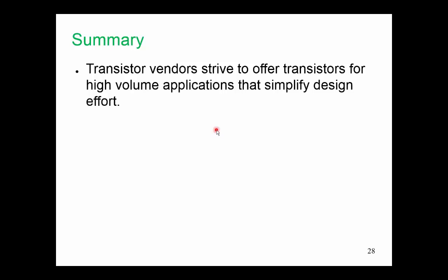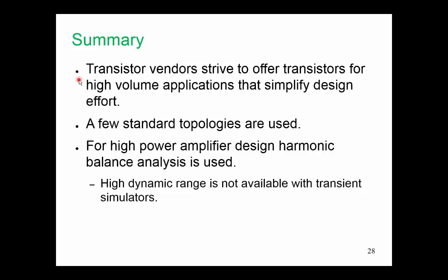In summary, these are the lessons that we learned from this case study. Transistor vendors strive to offer transistors for high volume applications that simplify design effort. And they do this by using internal matching. There are only a few standard topologies and you need to pick these up. And there are twists to these standard topologies. In this case study and other case studies I've presented, I've gone through most of those topologies. High power amplifier design harmonic balance analysis is essential. It is what is used throughout. Our restriction is that we must deal with discrete tones. And in our minds we have to relate the discrete tone performance to the actual performance with digitally modulated signals. And we'd really like to use SPICE, but unfortunately we rarely can. Because the dynamic range with transient simulators is not there, it simply cannot look at those low levels of intermodulation distortion. And as well the run times tend to be very long.